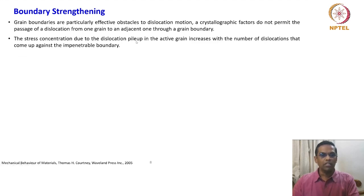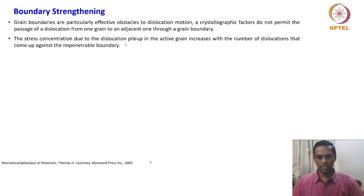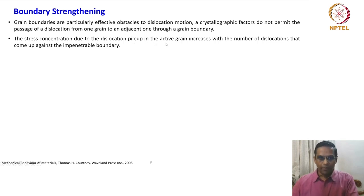The stress concentration due to dislocation pile-up in the active grain increases with the number of dislocations that come up against the impenetrable boundary. Dislocation pile-up means dislocations accumulate against an obstacle. An active grain is one that is favorably oriented — with maximum Schmid factor — where slip activity and deformation are proceeding. The next grain may not be favorably oriented to continue plastic deformation, so the boundary is impenetrable for those dislocations.